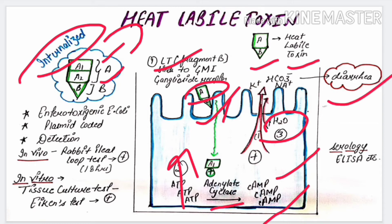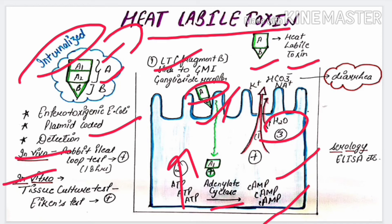The heat-labile toxin is possessed by enterotoxigenic E. coli and is plasmid-coded. For detection, it can be detected in vivo and in vitro. In vivo, a rabbit ileal loop test is positive after 18 hours. In vitro, tissue culture test and Achan test can be used. For serology, ELISA can be used.